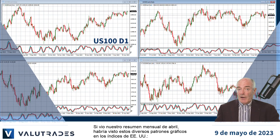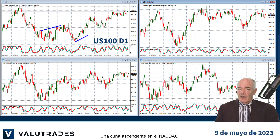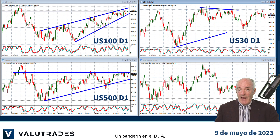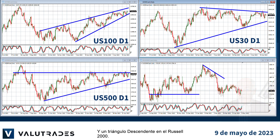If you saw our monthly summary from April you would have seen these diverse chart patterns on the US indices: a rising wedge on the NASDAQ, an ascending triangle on the S&P 500, a pennant on the Dow Jones Industrial Average, and a descending triangle on the Russell 2000. We need to keep an eye on all of these to expect breakouts.